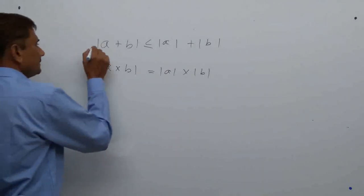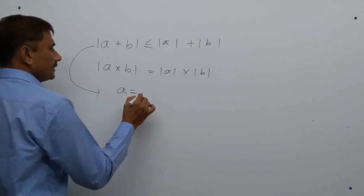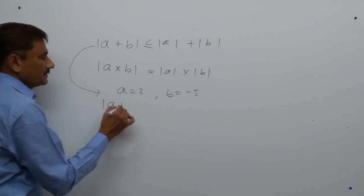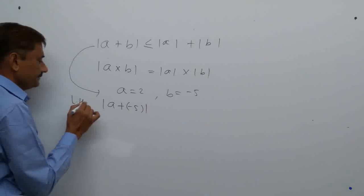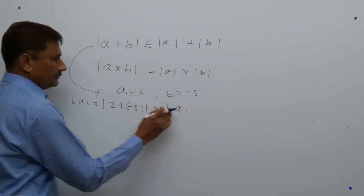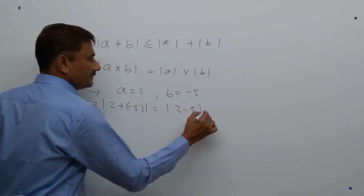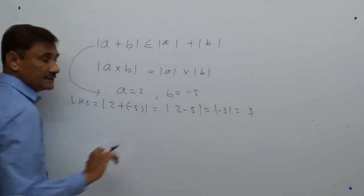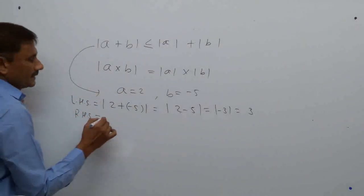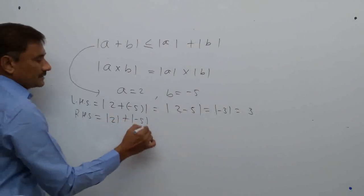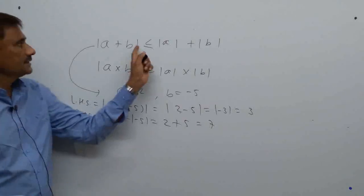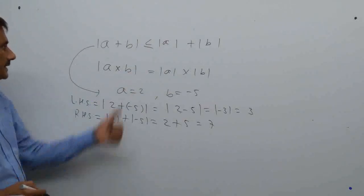Let's prove this with an example. Let A = 2, B = −5. For Property 1 (addition): LHS = |2 + (−5)| = |−3| = 3. RHS = |2| + |−5| = 2 + 5 = 7. So 3 < 7, confirming |a + b| ≤ |a| + |b|. For Property 2 (multiplication): LHS = |2 × (−5)| = |−10| = 10. RHS = |2| × |−5| = 2 × 5 = 10. Both equal, confirming |a × b| = |a| × |b|.